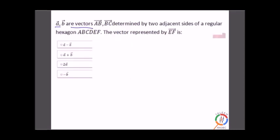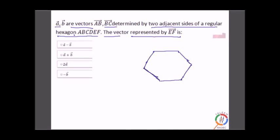Vectors a and b are determined by two adjacent sides AB and BC of a regular hexagon ABCDEF. Find the vector represented by EF. We have a regular hexagon with six sides. Let me draw it: vertices A, B, C, D, E, F. Side AB is represented by vector a, BC is represented by vector b. We need to find vector EF (shown in red). Let's use basic geometry and vector representation to solve this.